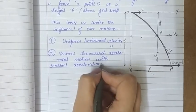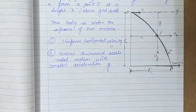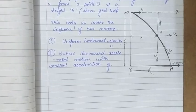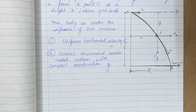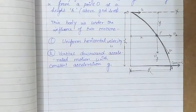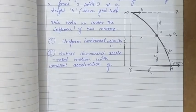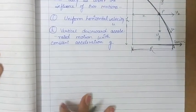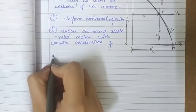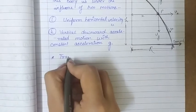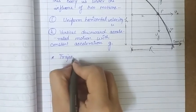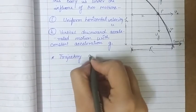These two motions are independent of each other and the body is under the influence of both simultaneously. Now, first of all, we have to show that the trajectory — the path of this projectile — is parabolic.